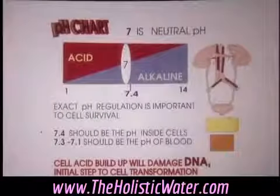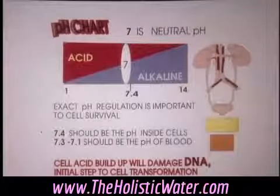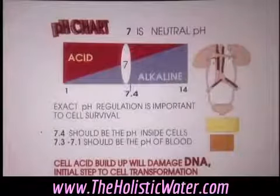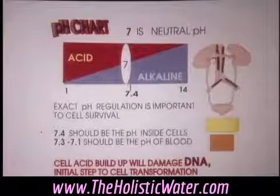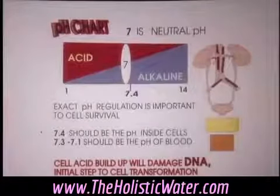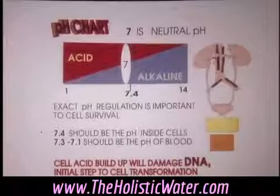Fibromyalgia pain occurs in the body when the body becomes acidic. If your urine is light yellow that's acceptable, but when it becomes orange, your body is getting acidic. You need a pH of 7.3 to 7.1 in the blood and 7.4 inside the cells. When you alter this through dehydration — not drinking enough water to wash the acid out — the interior of cells becomes acidic and you don't have enough sodium to remove the acidity from the cell.